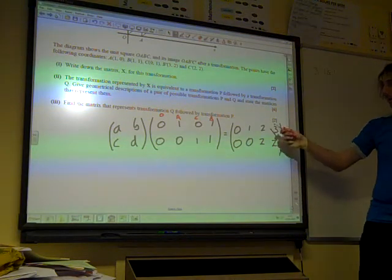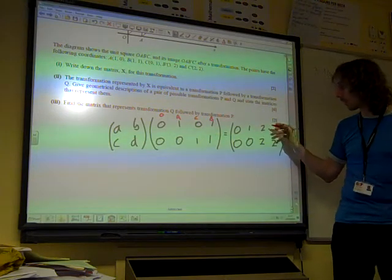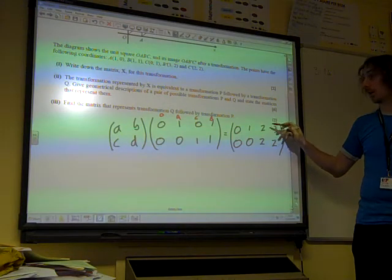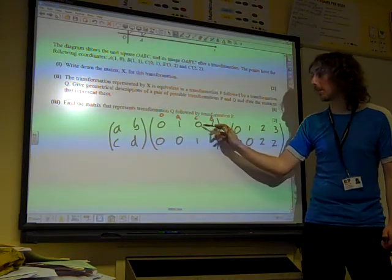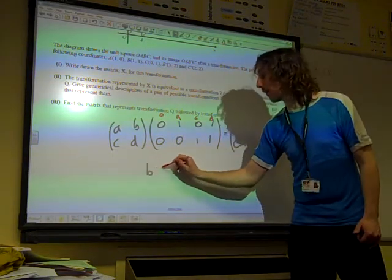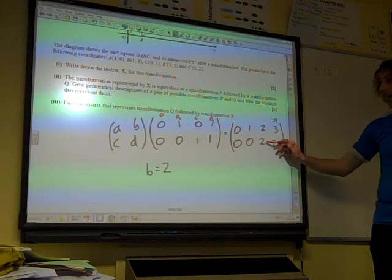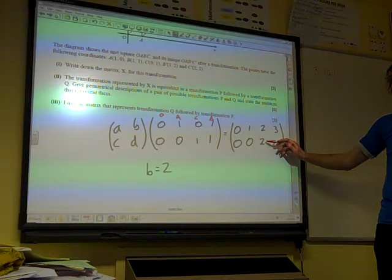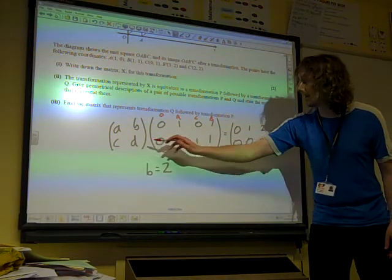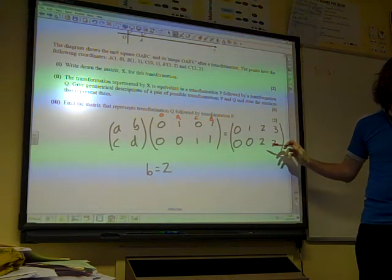Well, let's look at C, for example, there. That value there would come from doing the first row times the third column. So that's A times 0, plus B times 1, gives us 2. So from that, we get that B must be equal to 2. If we look at that number down there, that comes from the second row times the third column. So that is C times 0, plus D times 1, and that gives us 2. So D must be 2 as well.